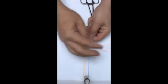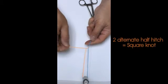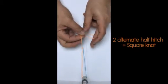In this demonstration, two alternate half-hitch knots equivalent to a square knot are used as a sliding knot.